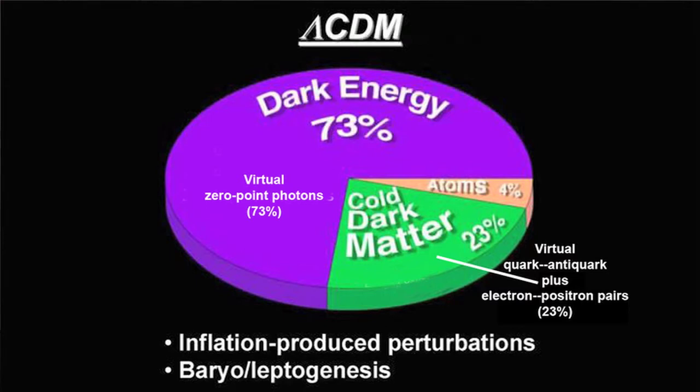Virtual light — the virtual light fields, the randomly fluctuating virtual light fields inside the vacuum — actually anti-gravitates. You can show that from Einstein's equivalence principle and what's called Lorentz invariance — that's standard. Is that why the universe is expanding?